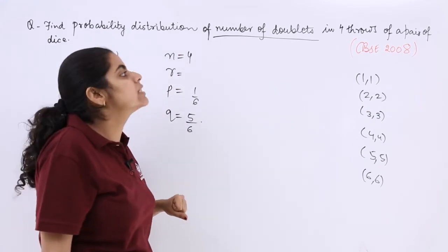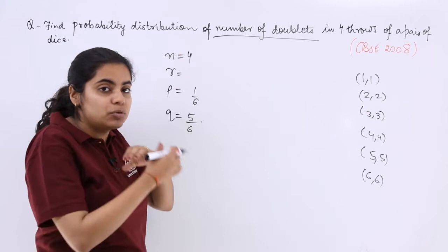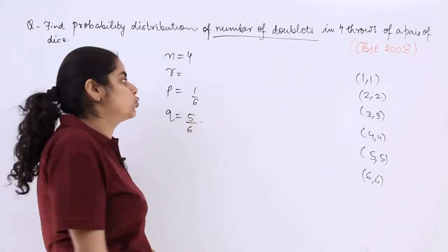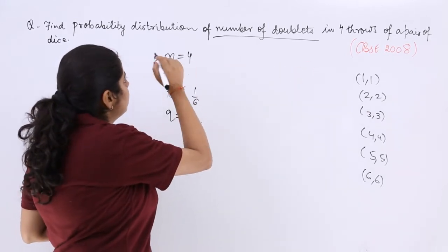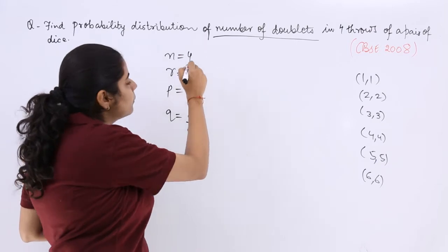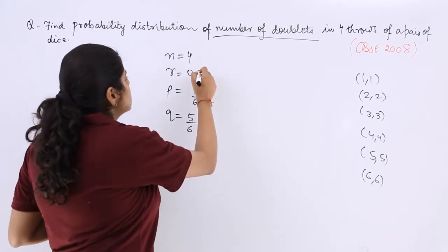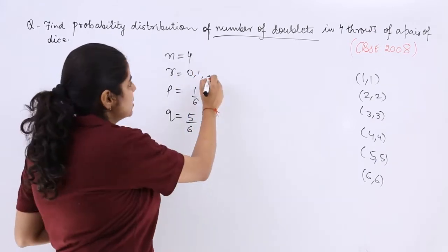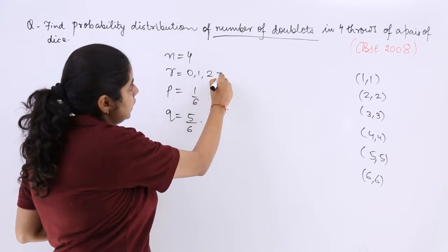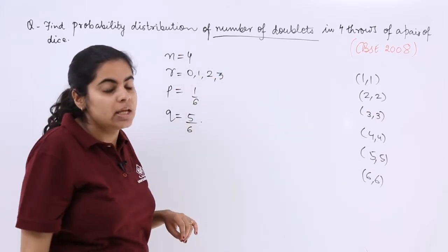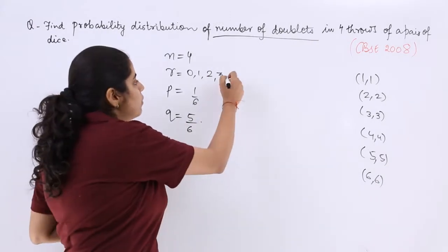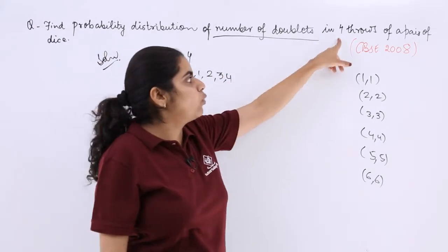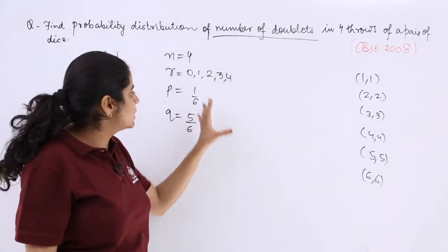Now these are the different things that we have to consider. And now since there are four throws and we have to go for whole probability distribution, we will see that r is zero, r is one, r is two, three. Three should not be the last, four throws are there so four will be the last. So this is the whole story.